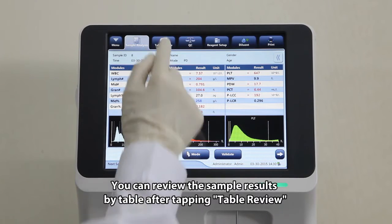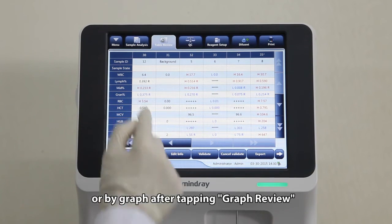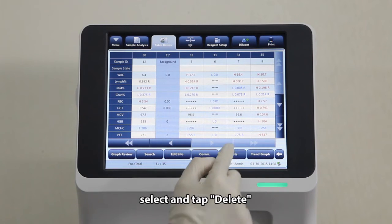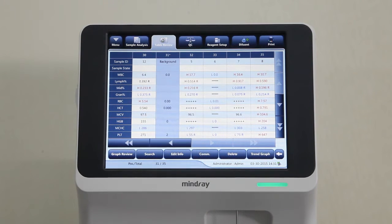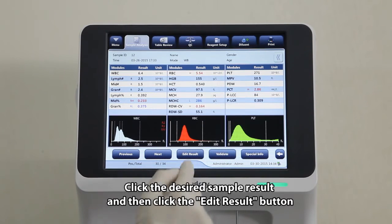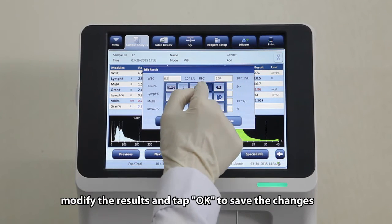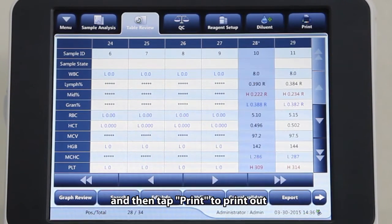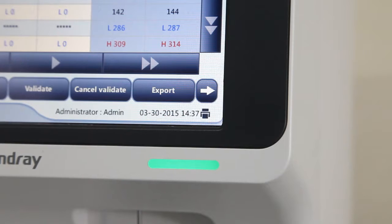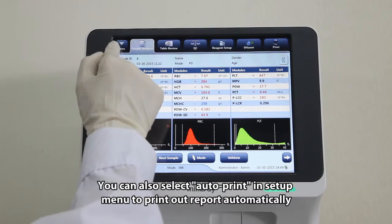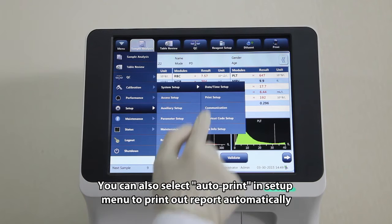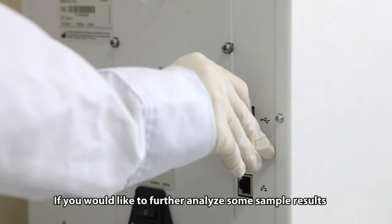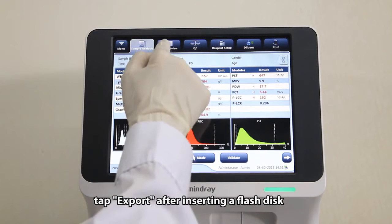You can review the sample results by table after tapping Table Review or in graphs by tapping Graph Review. For unwanted sample results, select and tap Delete. Every sample result is editable. Click the desired sample result and then click the Edit Result button. Modify the results and tap OK to save the changes. Select sample records to be printed and then tap Print to print out. You can also select Auto-Print in Setup Menu to print out reports automatically. If you would like to further analyze some sample results, tap Export after inserting a flash disk.